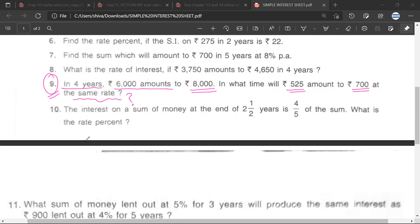First we'll find the SI. It will be amount minus principle, so it will be 2,000.